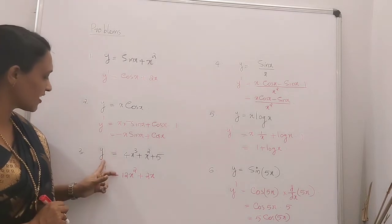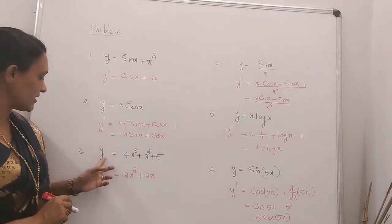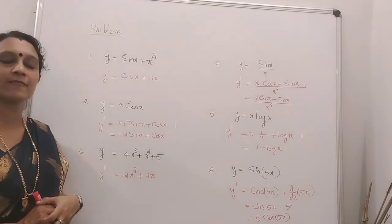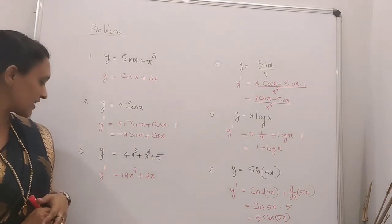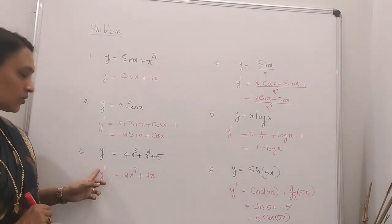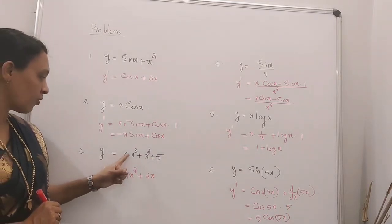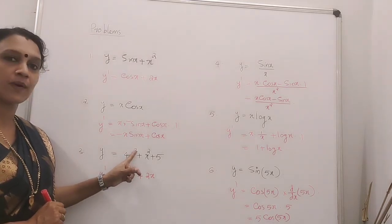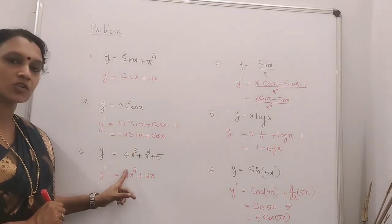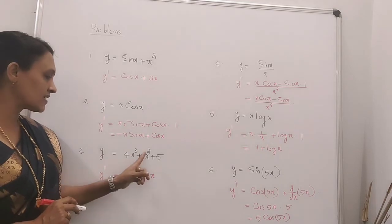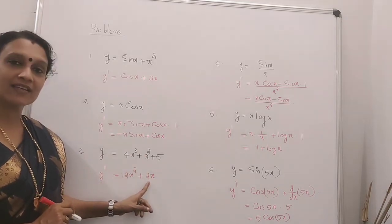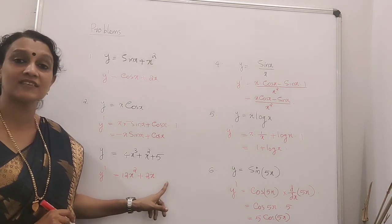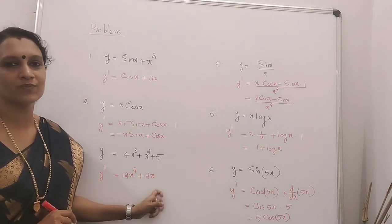Third problem: y is equal to 4x cubed plus x squared plus 5. Its derivative y dash: derivative of 4x cubed is 4 times 3x squared, giving 12x squared; derivative of x squared is 2x; and 5 is a constant whose derivative is 0. So y dash equals 12x squared plus 2x.